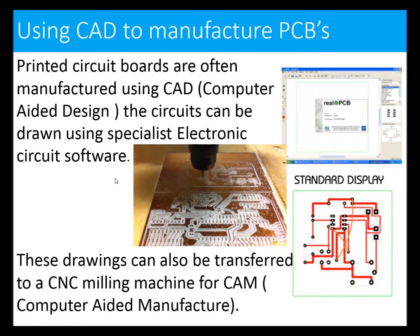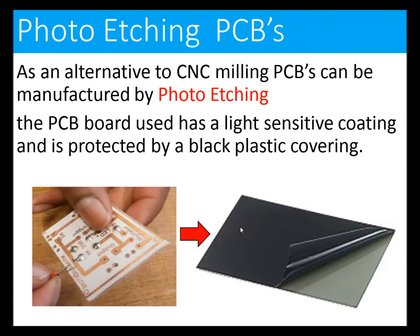Printed circuit boards are often manufactured using computer aided design — CAD. The circuits can be drawn using specialist electronic software such as Real PCB. These drawings can also be transferred to a CNC milling machine for computer aided manufacture. Here's a picture of a PCB being manufactured by milling away the copper on top and leaving the tracks. That is CAD and CAM to manufacture a printed circuit board.